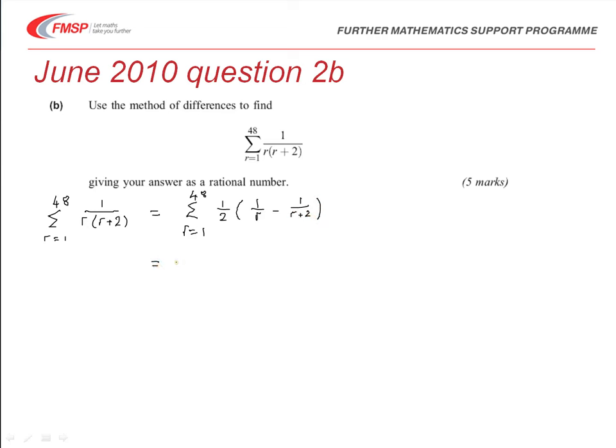So, we can now start writing this out to work out what's going to happen with our terms. So, again, taking the half out of the front, we put 1 into the first, when r is 1 into the first one, we're going to get 1 over 1, minus 1 over 3.